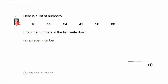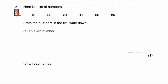Question number five: we've got a list of numbers — 18, 22, 34, 41, 56, and 80. From this list, we've got to write down an even number. Even numbers end in either a 0, 2, 4, 6, or 8. So 18 is even, 22 is even, 34 is even, 56 is even, and 80 is even. You can write down any of the numbers except 41. I've written 18 down, but you could write any of them except 41.